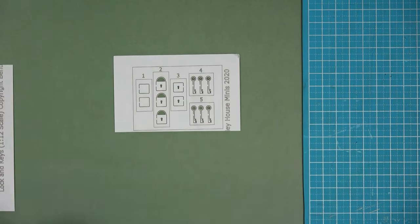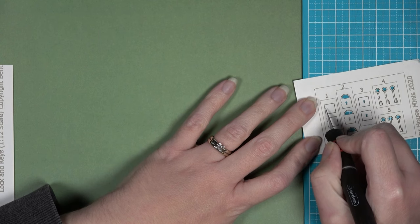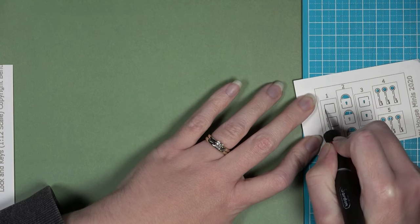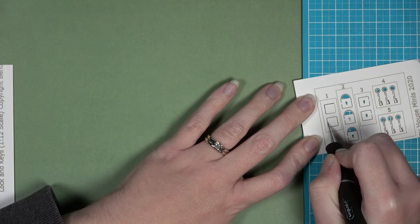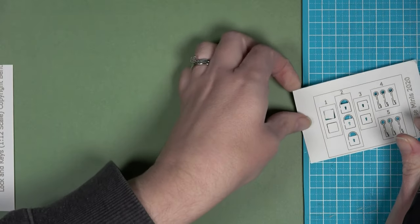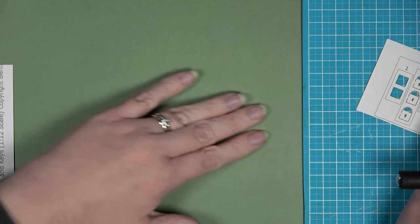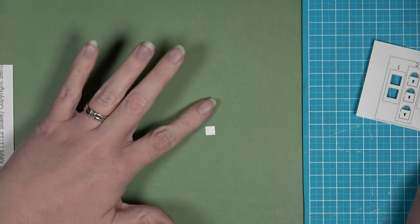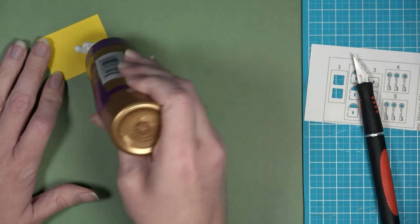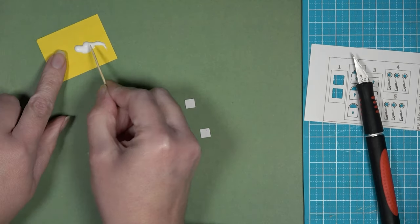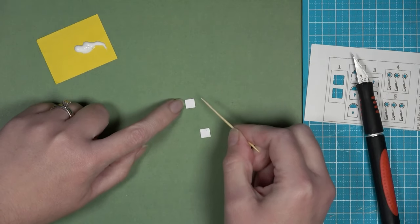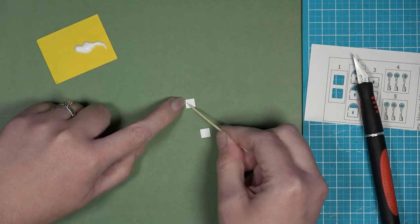The first thing you're going to need is a craft blade so that you can cut through the small tabs that are holding each shape in place. To start out, cut out both shapes that are in the section marked with the number one. These are going to make up the back of your lock.